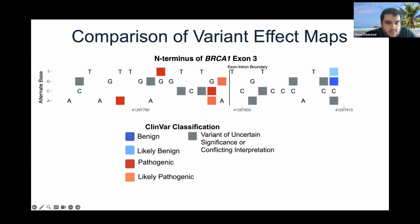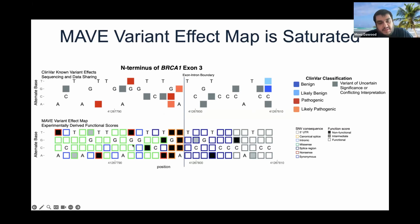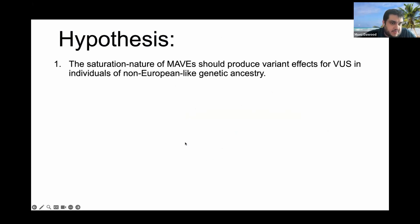However, if you make this variant effect map based on MAVE data — showing the exact same BRCA1 exon 3 locus but filled in with saturation genome editing data from the Findlay et al. 2018 paper — every position has a functional score, every variant has an experimental readout, and these readouts can be used within the clinical framework. The key word here is that this variant effect map from a MAVE is saturated. This led us to the hypothesis: the saturation nature of MAVEs should produce variant effects for VUS in individuals of non-European genetic ancestry.